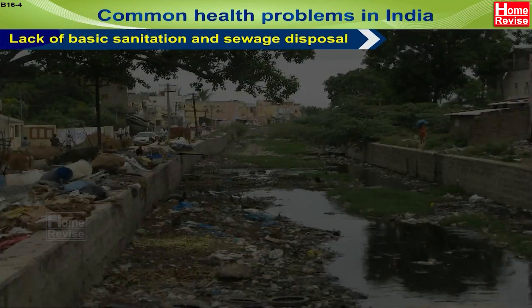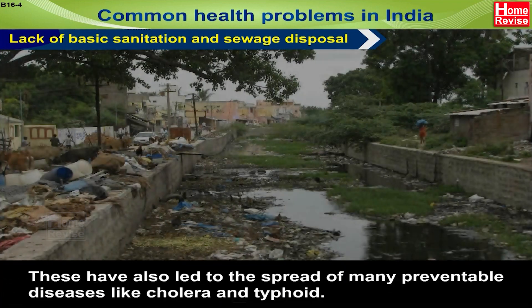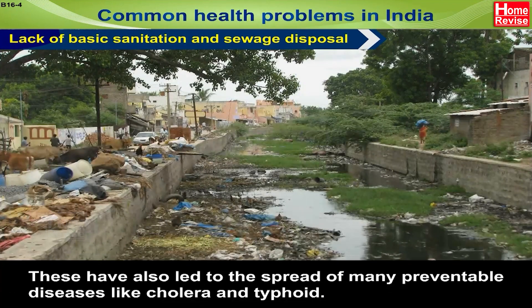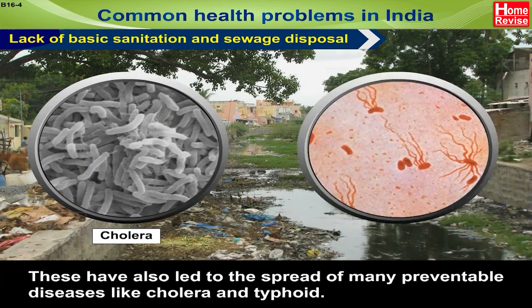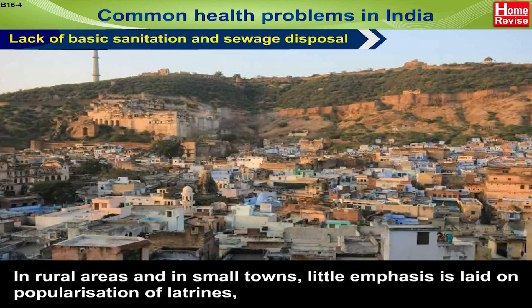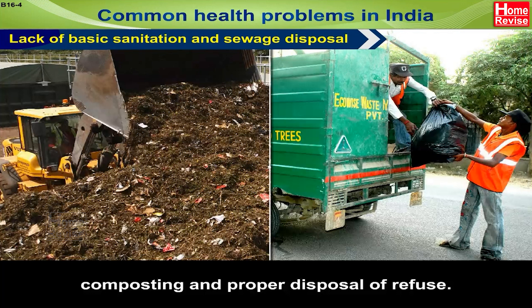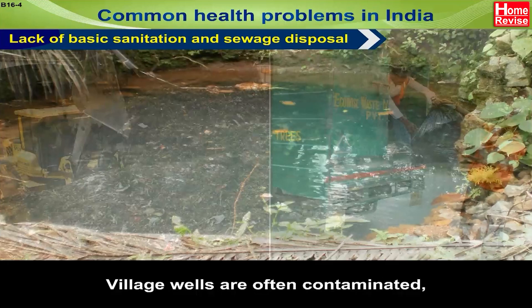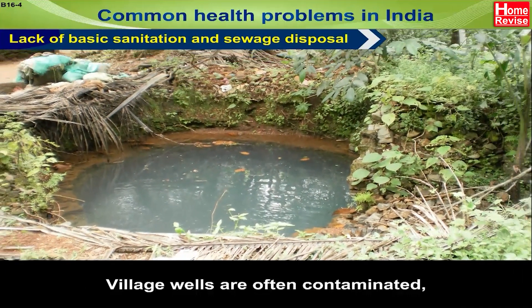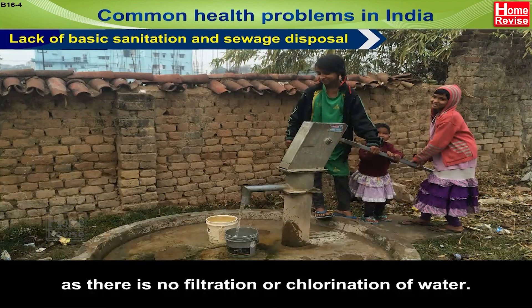Lack of basic sanitation and sewage disposal has also led to the spread of many preventable diseases like cholera and typhoid. In rural areas and small towns, little emphasis is laid on the use of latrines, composting, and proper disposal of refuse. Village wells are often contaminated as there is no filtration or chlorination of water.